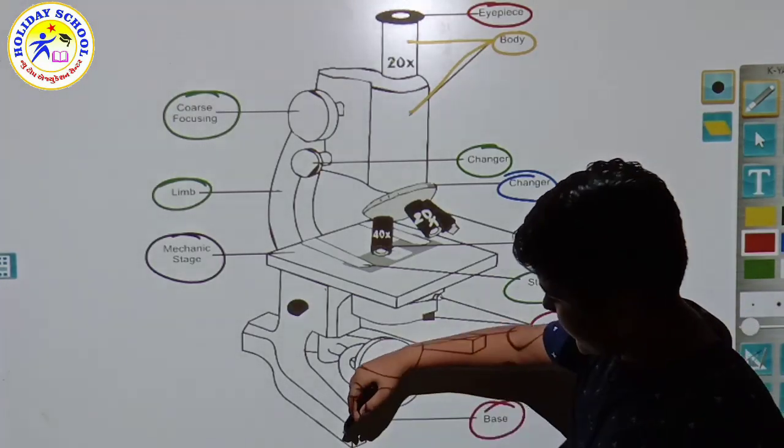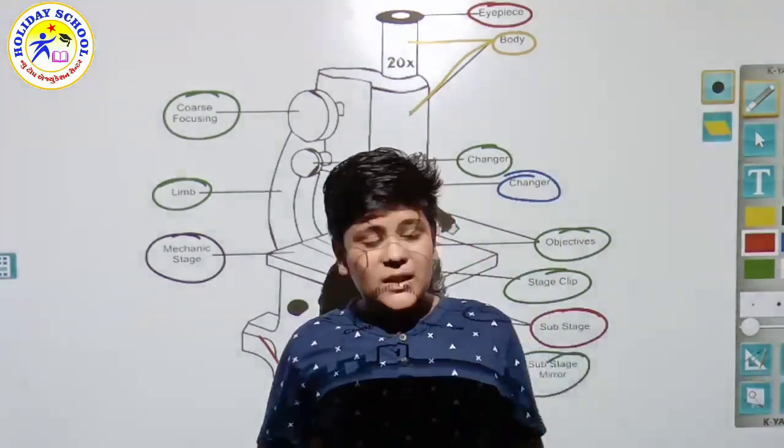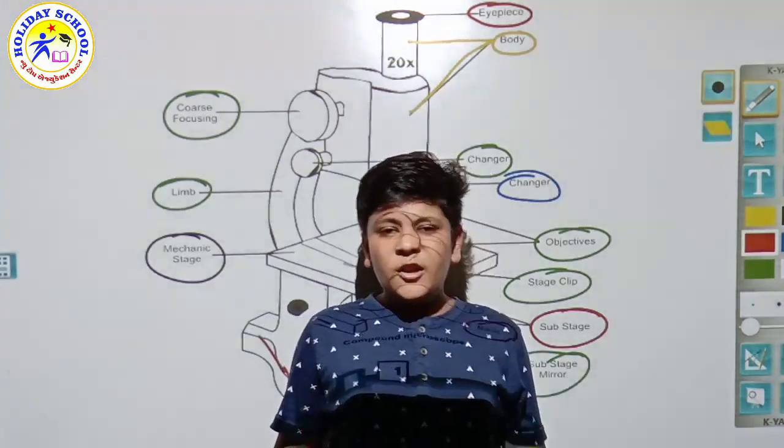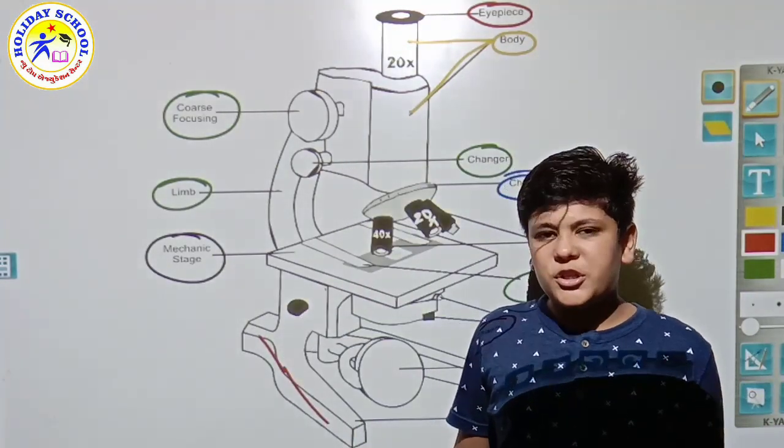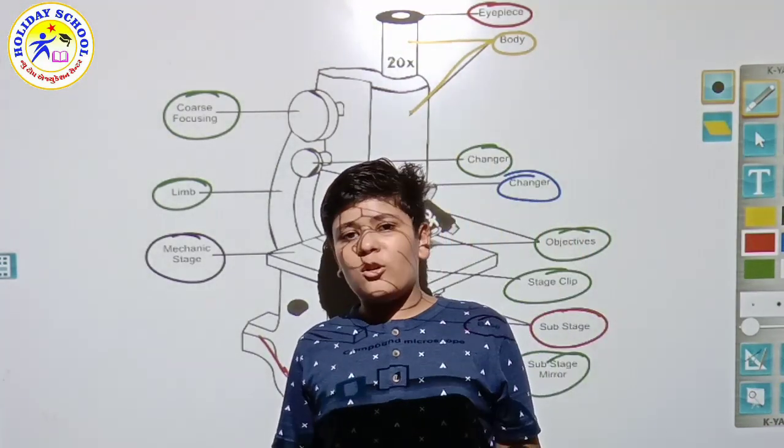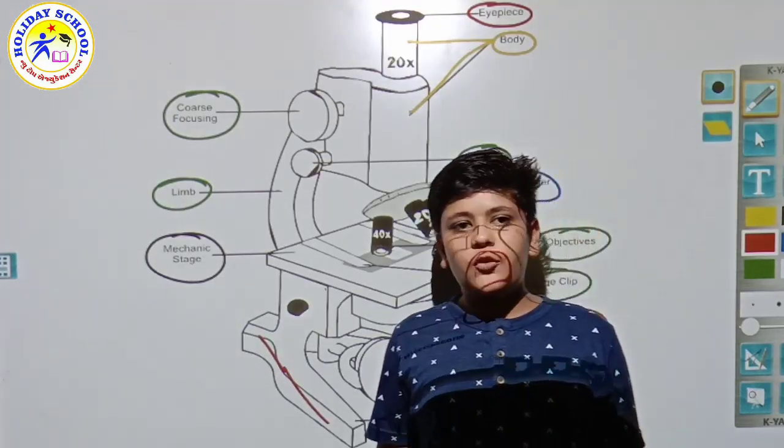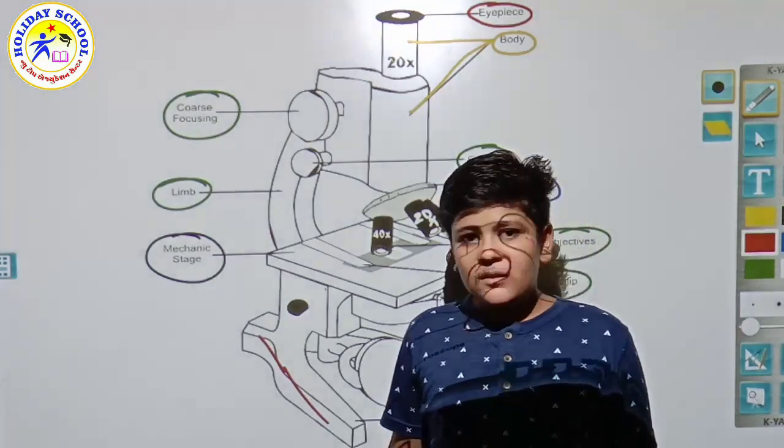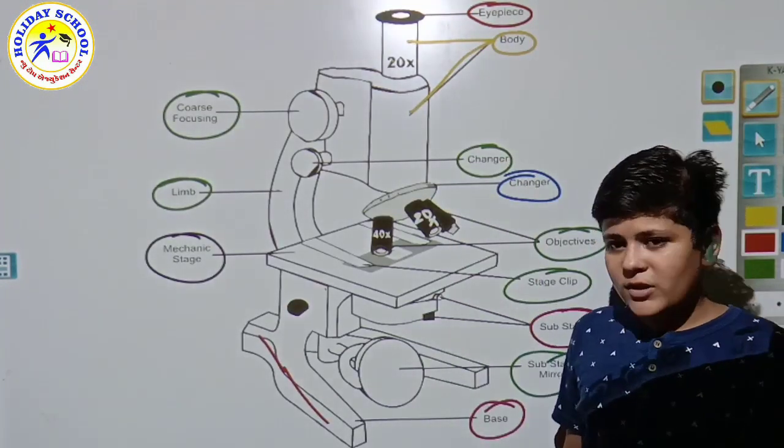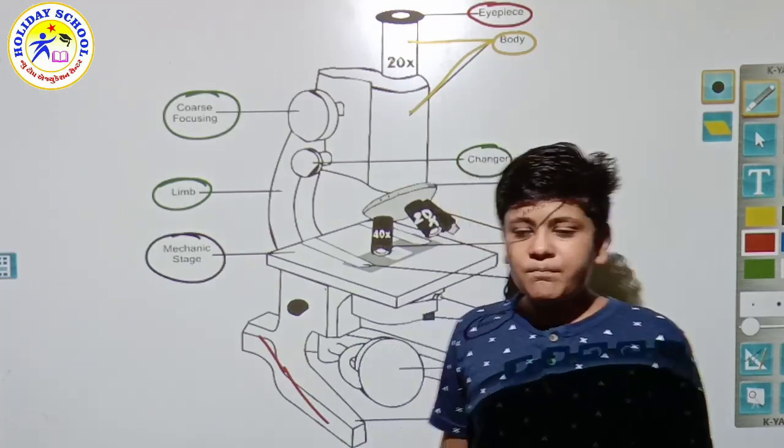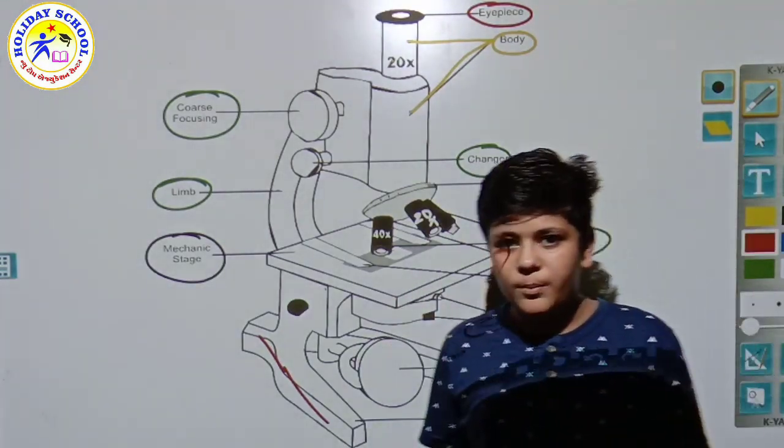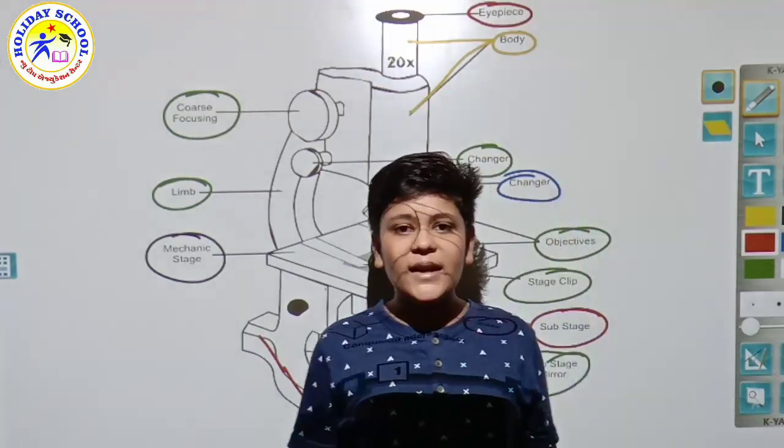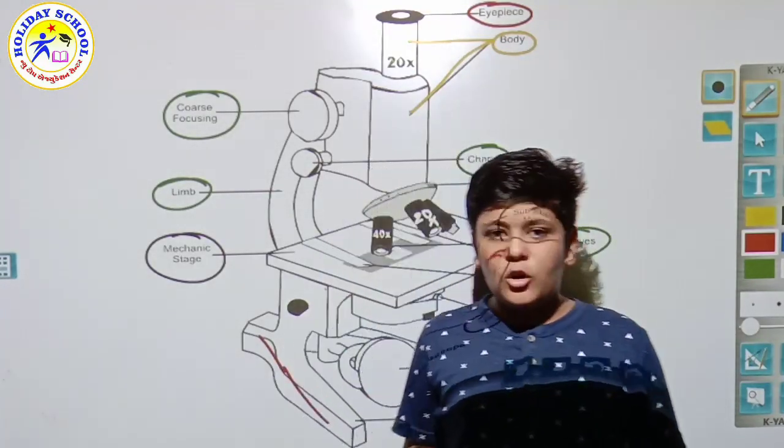Friends, you may have the question of when the microscope was invented. First of all, the microscope was invented very simply. The first simple microscope was invented, then the first compound microscope was invented in 1590. After that, time passed and now many types of microscopes are there, which we can see in the next videos.